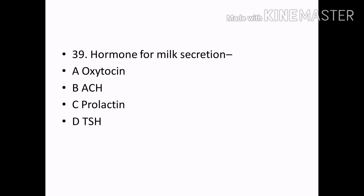Hormone for milk secretion is: Options — Oxytocin, ACTH, Prolactin, TSH. Correct answer: Option C — Prolactin.